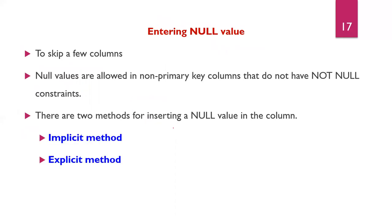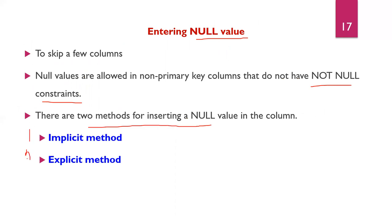The next concept is inserting NULL values. If you encounter a null value, you can skip that particular column. Null values are allowed in non-primary key columns that do not have a NOT NULL constraint. There are two methods for inserting a null value: one is called the implicit method, and the second is called the explicit method.